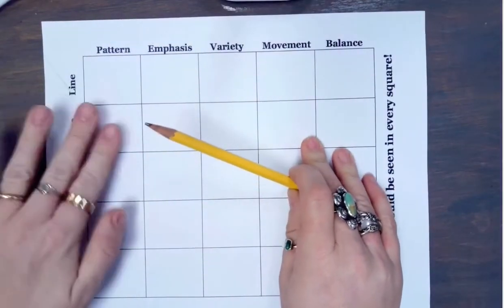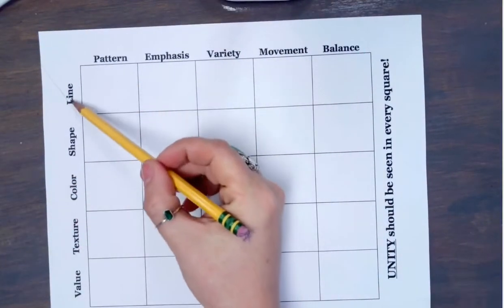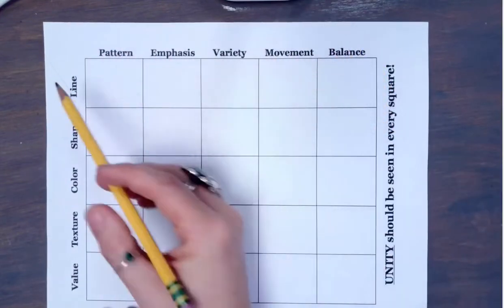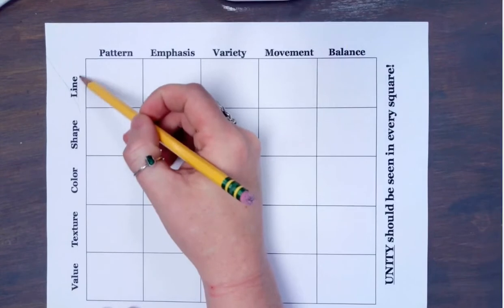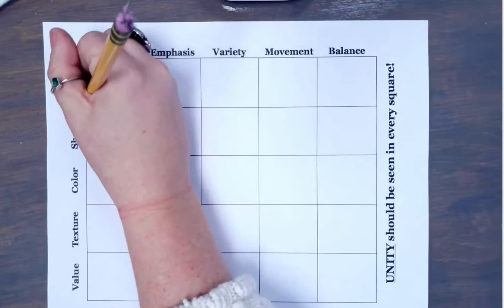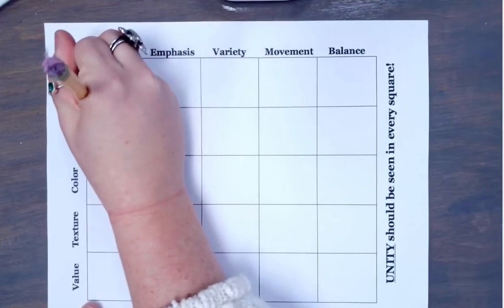In order to complete each square of the matrix you have to look at the left side of your paper and then the top of your paper. You'll see that on the left side there are tons of different elements and on the top of your paper there are different principles of design.